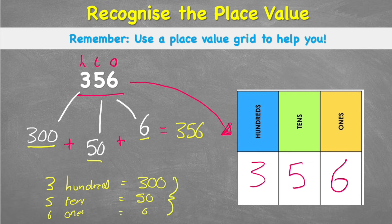And again, adding these together will always equal my original number, 356. So the really important thing to learn today is that even though this looks like a 5, it's not just a 5. Because it's in the 10s column, it actually has the value of 50.